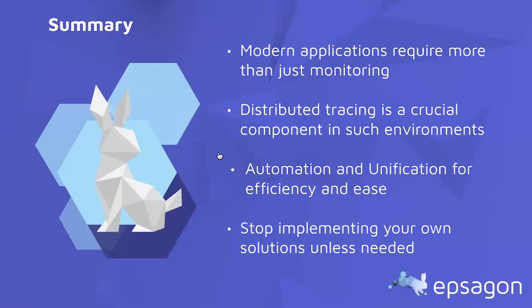To summarize what we've discussed today: modern applications are more complex than ever, and simply monitoring basic metrics is not enough. Distributed tracing is absolutely critical to find that needle in the haystack across your stack, and tracing acts like the glue between metrics and logs — but that tracing should not come at the expense of engineers or ops professionals; it should be as automated as possible. While off-the-shelf solutions have their time and place, focus on the business itself rather than scaling and managing yet another in-house solution that isn't directly adding to the revenue.